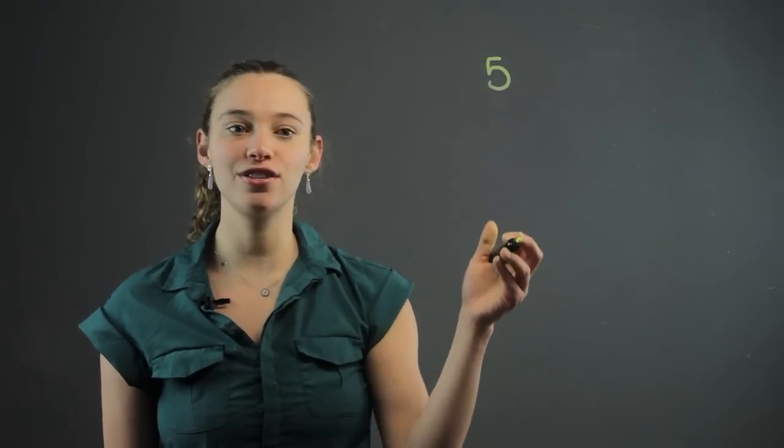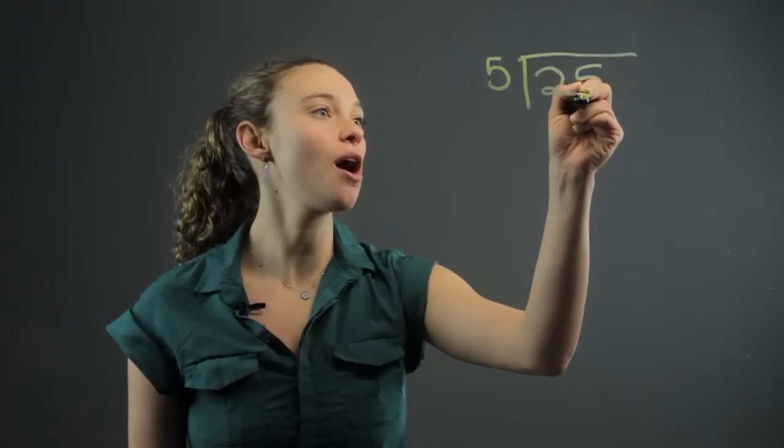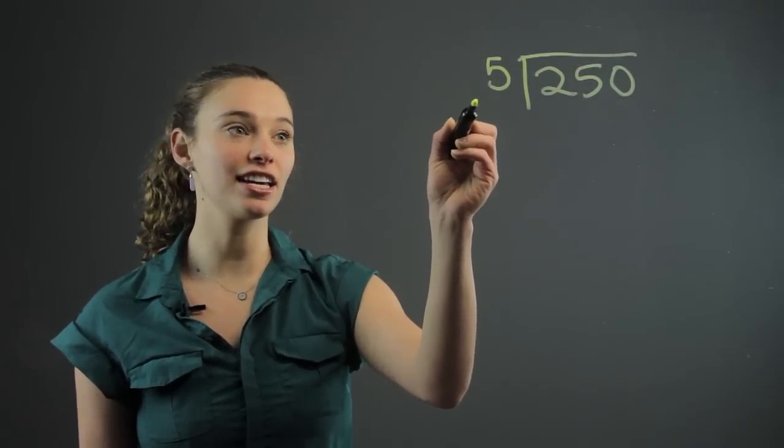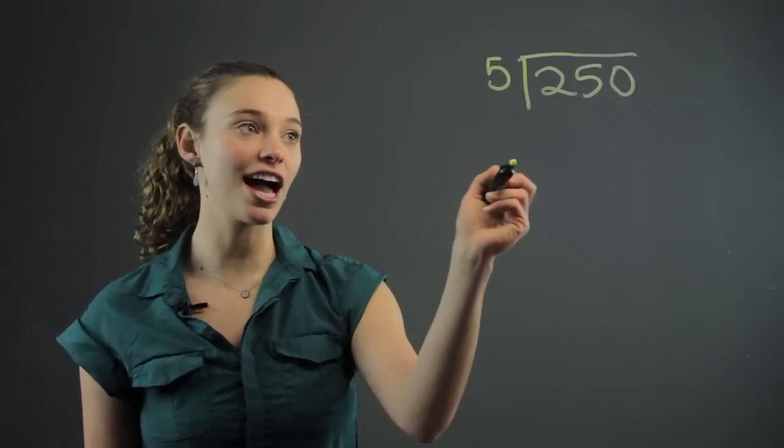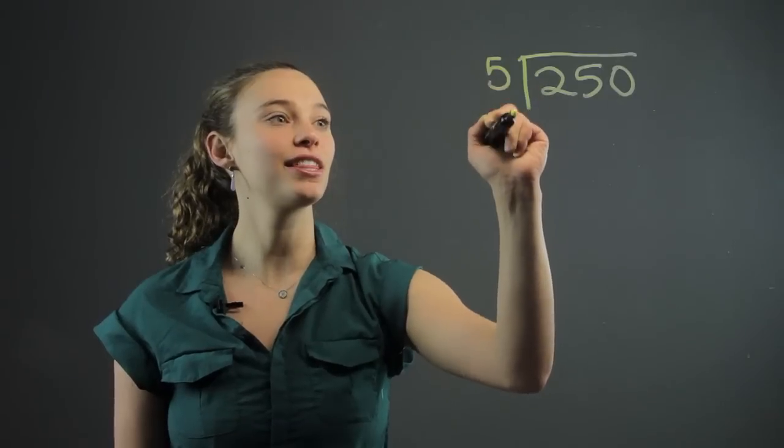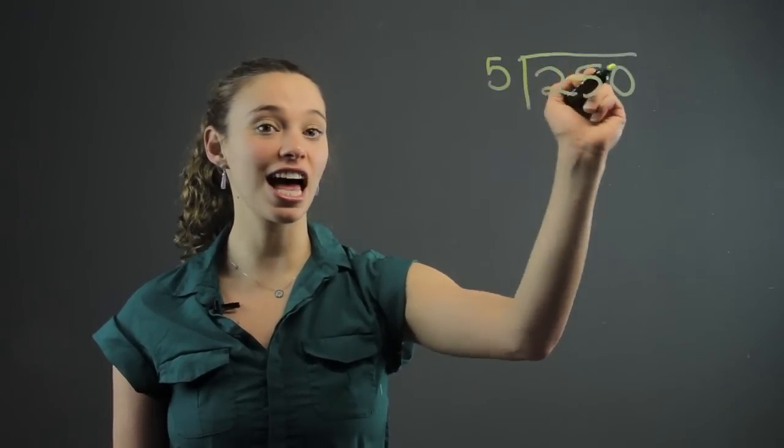Let's look at a number like, say we're dividing 5 into 250. So we always set it up with the smaller number that we're dividing by on the outside and the bigger number that we're dividing into on the inside with these lines like so.